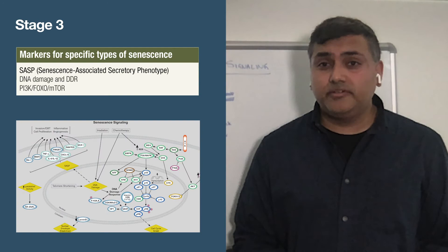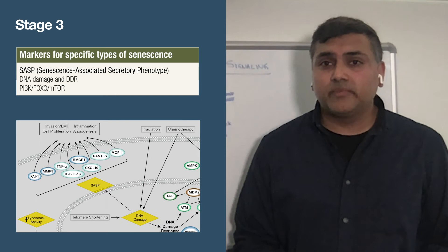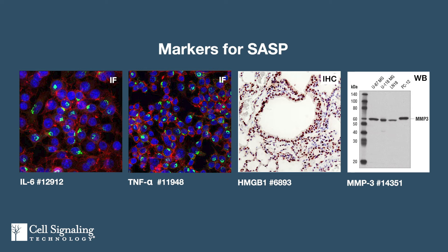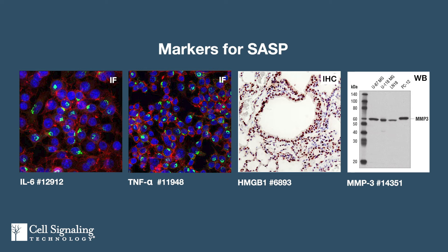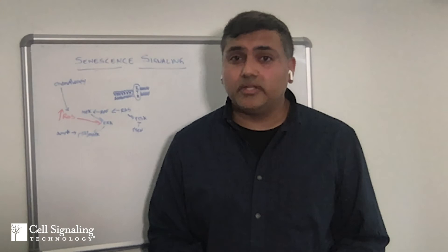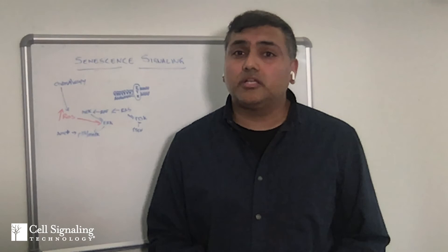The third stage involves markers for different types of senescence. The secretory phenotype—known as SASP—includes increased expression and exocytosis of cytokines, growth factors, and proteases. It's worth examining several SASP markers because expression of individual SASP components can vary in different contexts. Other types of senescence may be evaluated using markers for DNA damage response targets or markers in the PI3 kinase/mTOR signaling pathway. There isn't a single marker to give a yes or no answer, so examine several markers and cross-reference data points.